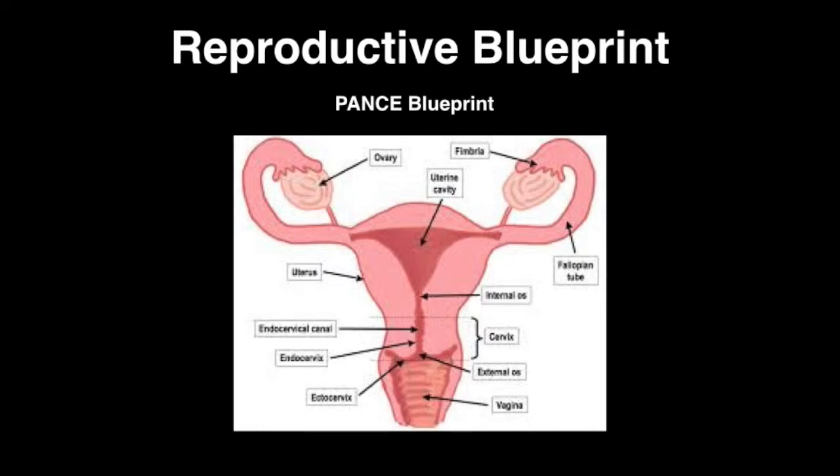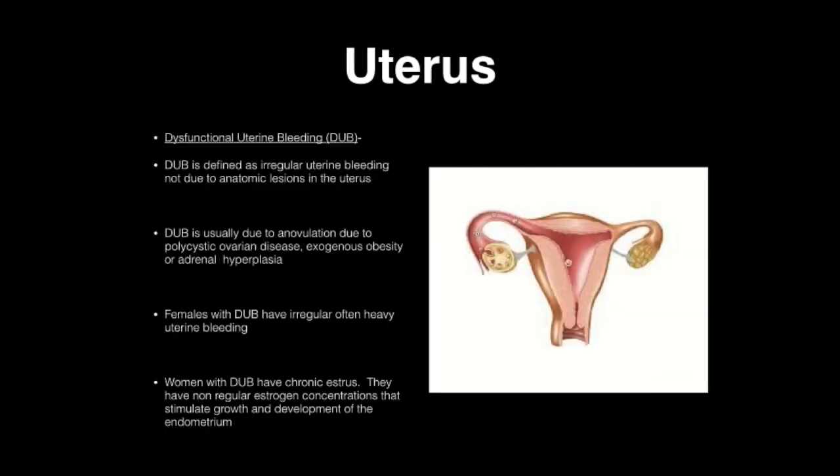Today we're going to talk about the reproductive blueprint for the NCCPA blueprint for the PANS and PANRI. The first item on the reproductive blueprint is the uterus. There are several topics under the uterus, and the first topic we're going to talk about is dysfunctional uterine bleeding.